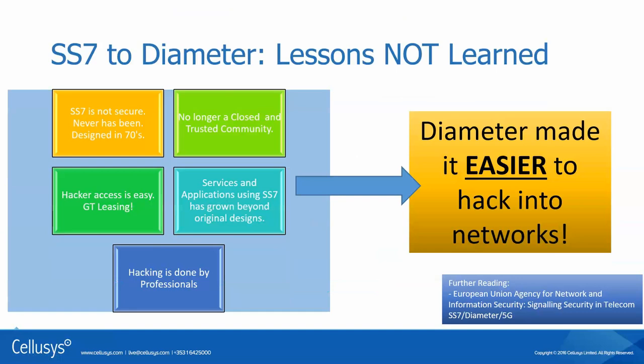In the LTE network we're using diameter. In the 3G and 2G networks, we were using SS7. SS7 was not secure — it's got the same problems. SS7 when it first came out was a closed group of just a few carriers with specialized connectivity. Now it's all IP access, and there are thousands of people accessing it. You can even lease access to the network, getting onto this formerly closed network. Also, what we're doing with the signaling networks has grown way beyond the first designs. And this is all done by professionals — for money. SS7 was not secure, and we've actually just made it even worse with diameter.